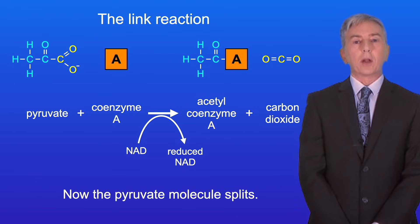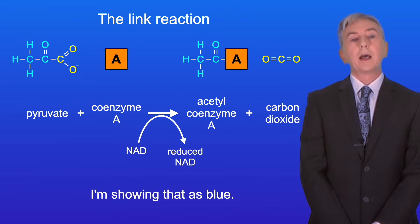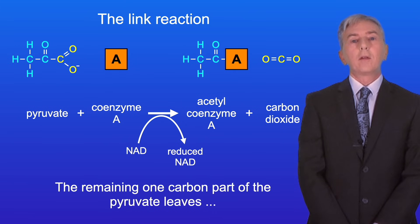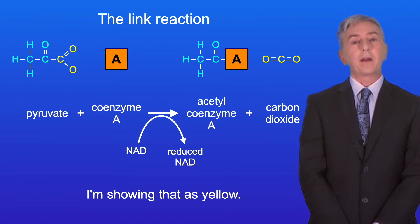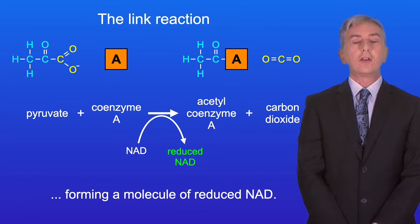Now the pyruvate molecule splits. A two carbon group from the pyruvate is added to the coenzyme A, and I'm showing that as blue. This forms the molecule acetyl coenzyme A. The remaining one carbon part of the pyruvate leaves as a molecule of carbon dioxide, and I'm showing that as yellow. At the same time, an oxidation reaction takes place, forming a molecule of reduced NAD.